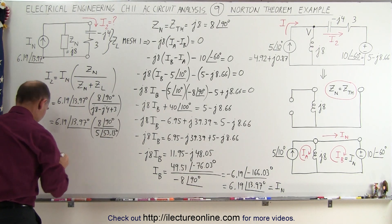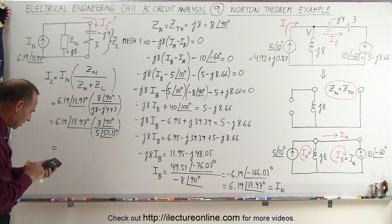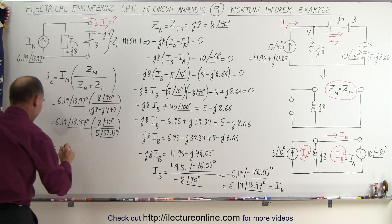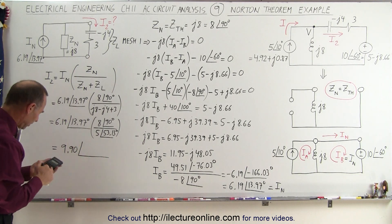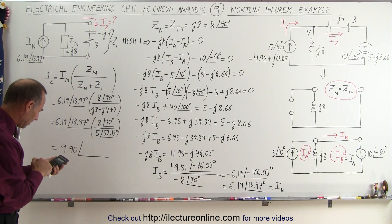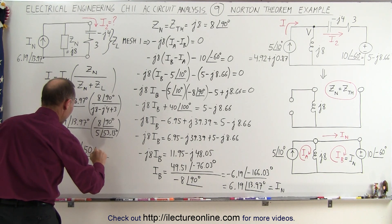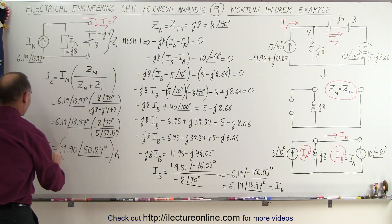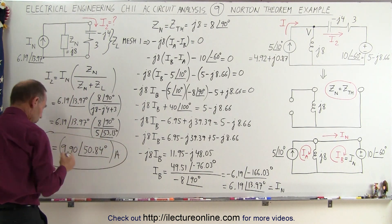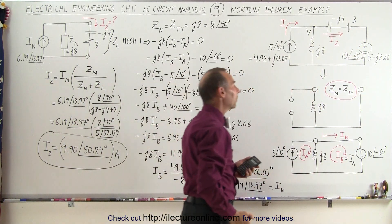Working this out: 6.19 times 8 divided by 5 equals 9.90, with a phase angle of 13.97 plus 90 minus 53.13, giving a phase angle of 50.84 degrees. This is in amps, and this is I sub 2 — the current through the branch we're looking for, the capacitor and the resistor in that circuit.